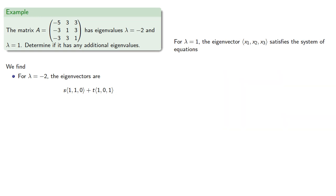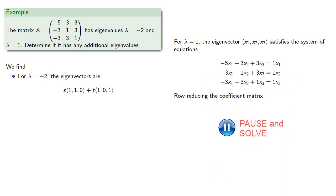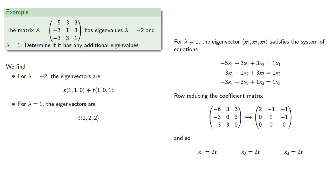For lambda equals 1, the eigenvector satisfies the system of equations. Row reducing our corresponding coefficient matrix gives us a single free variable. And so our solutions are going to be expressible in terms of a single eigenvector. And this gives us three linearly independent eigenvectors. And since A is a matrix in R3, there can be no additional eigenvalues.